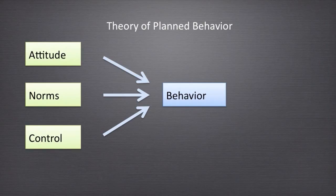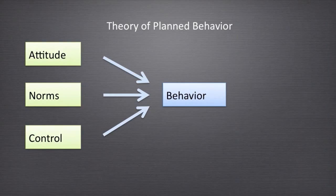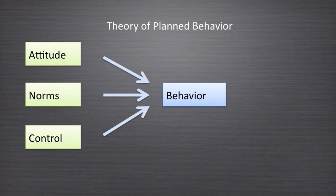For example, the theory of planned behavior suggests that behavior or behavioral intention depends on your own attitudes towards behavior — what you think should be done — subjective norms, which is social approval or disapproval of a certain behavior, a factor that is different from your own knowledge and attitudes, and behavioral control, meaning how doable you think this behavior is.